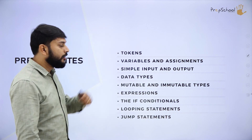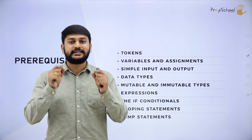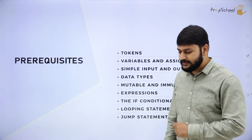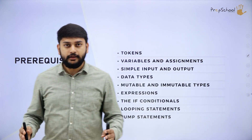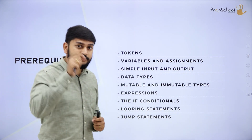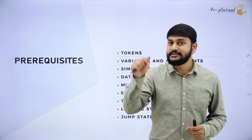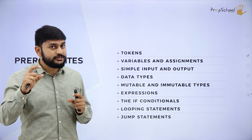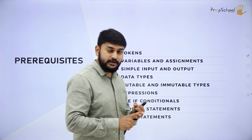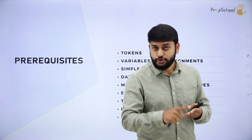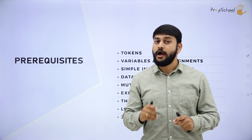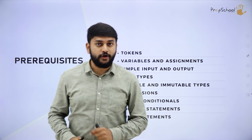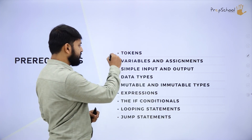The first topic is tokens — the smallest individual unit of a programming language. Imagine I have a building. Treat this building as a program. If I want to construct this building, I use the smallest individual units like bricks, cement, iron, stone. Same way, if I want to have a program, I should have some smallest individual units — that is what I call a token.